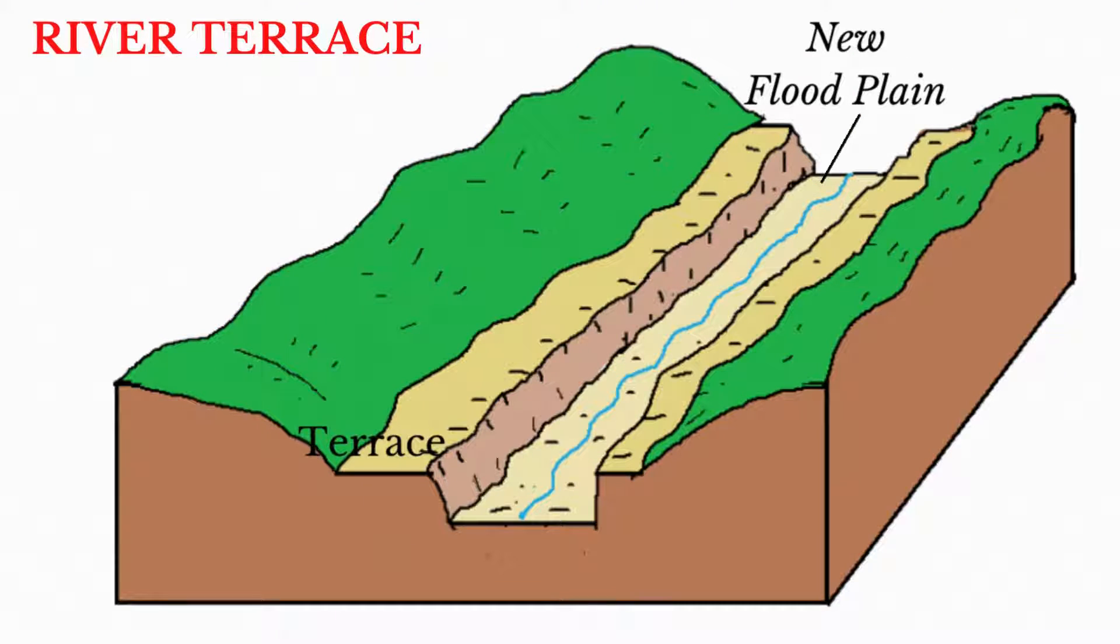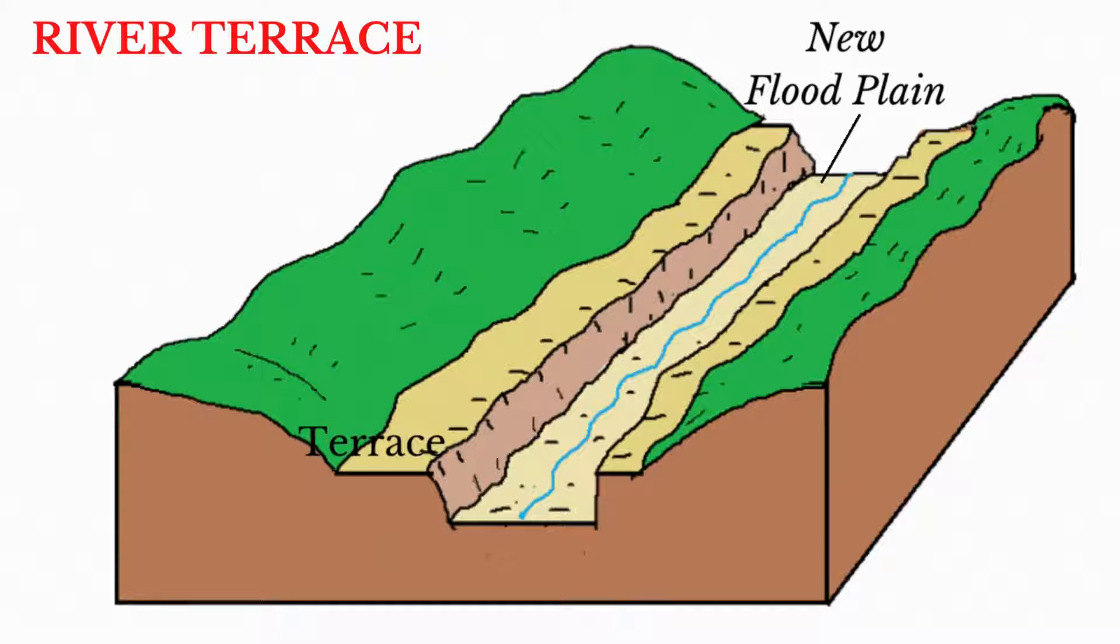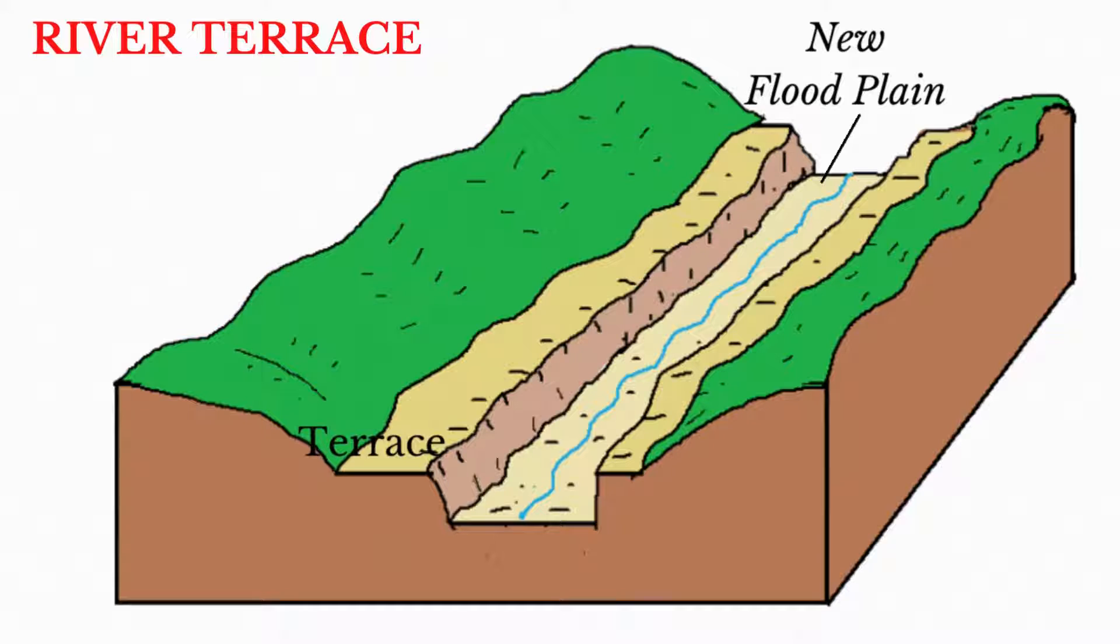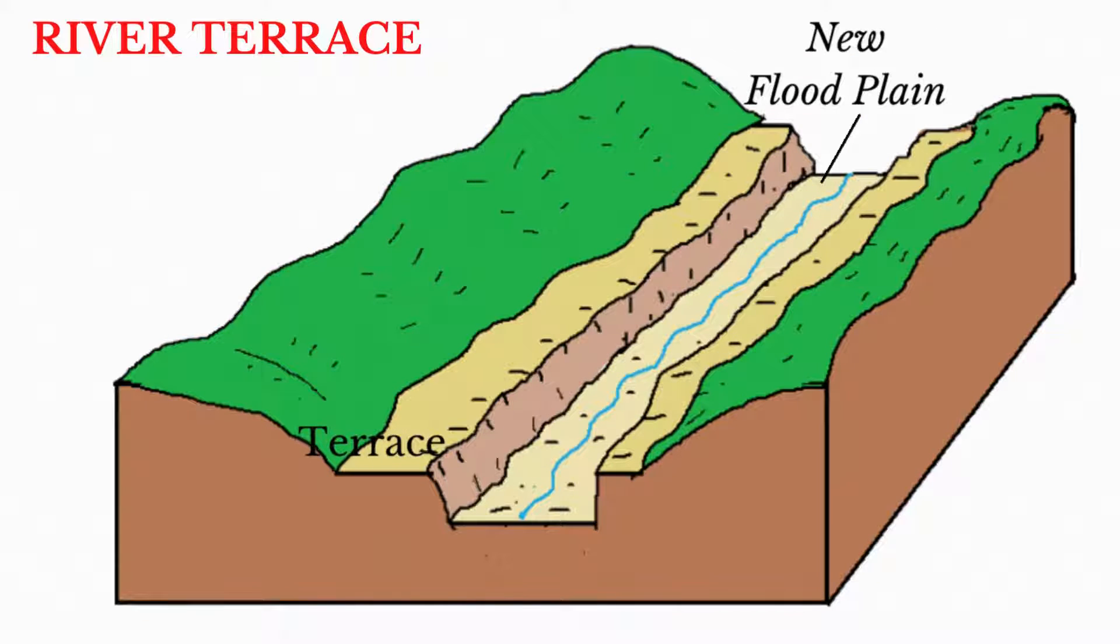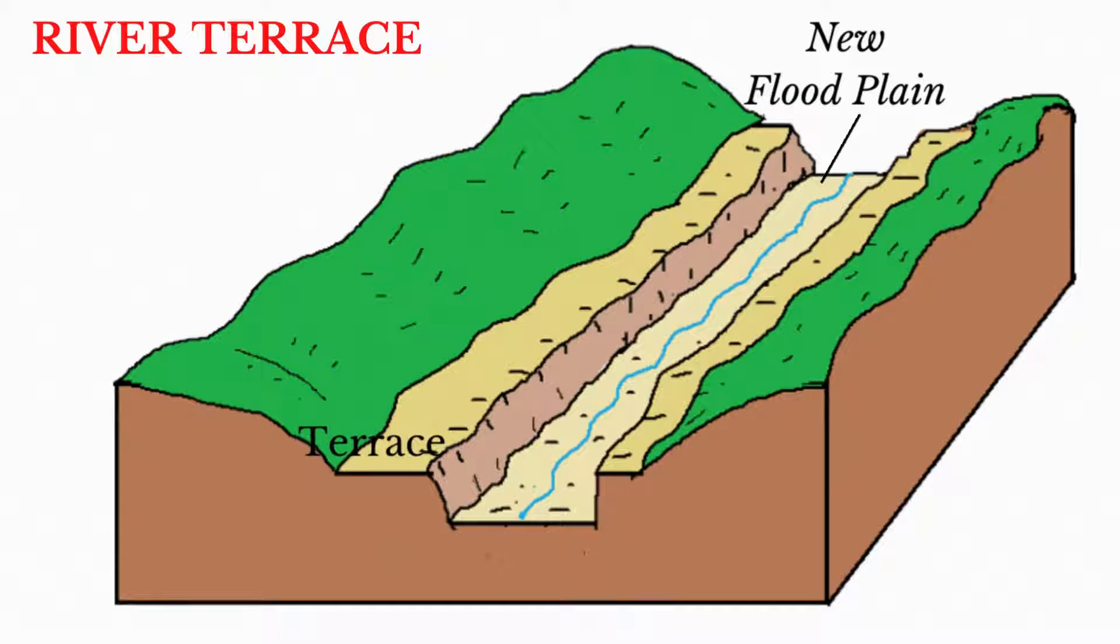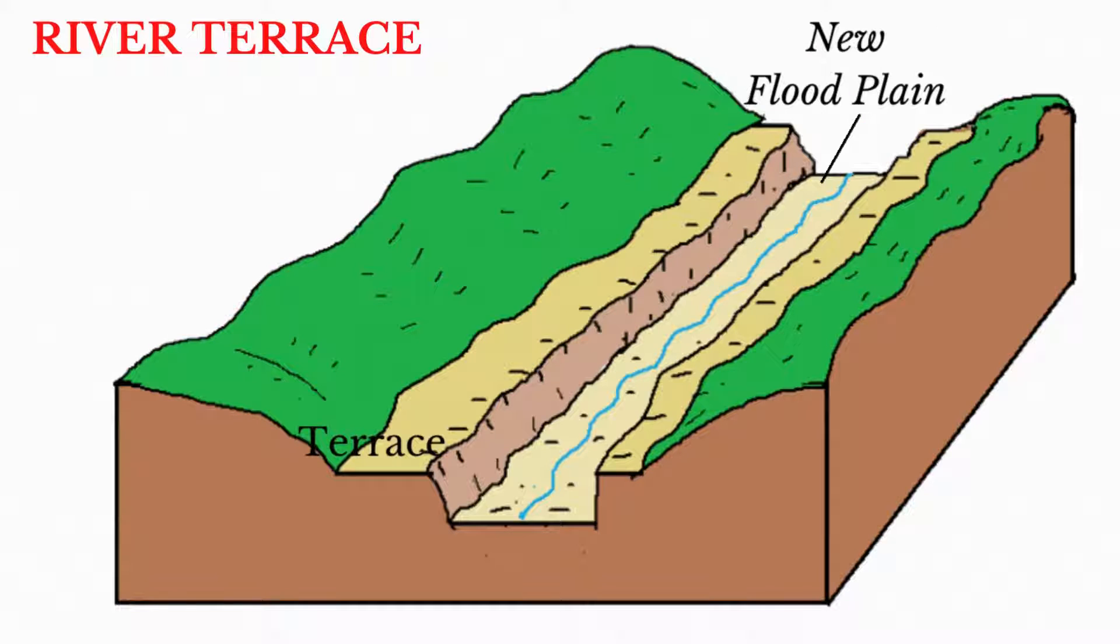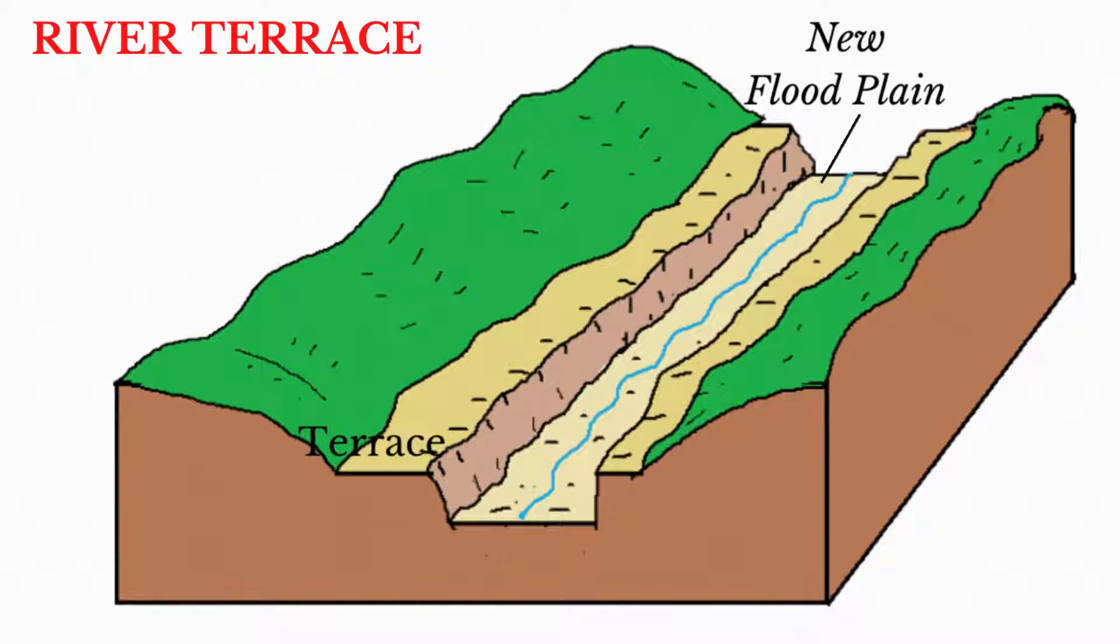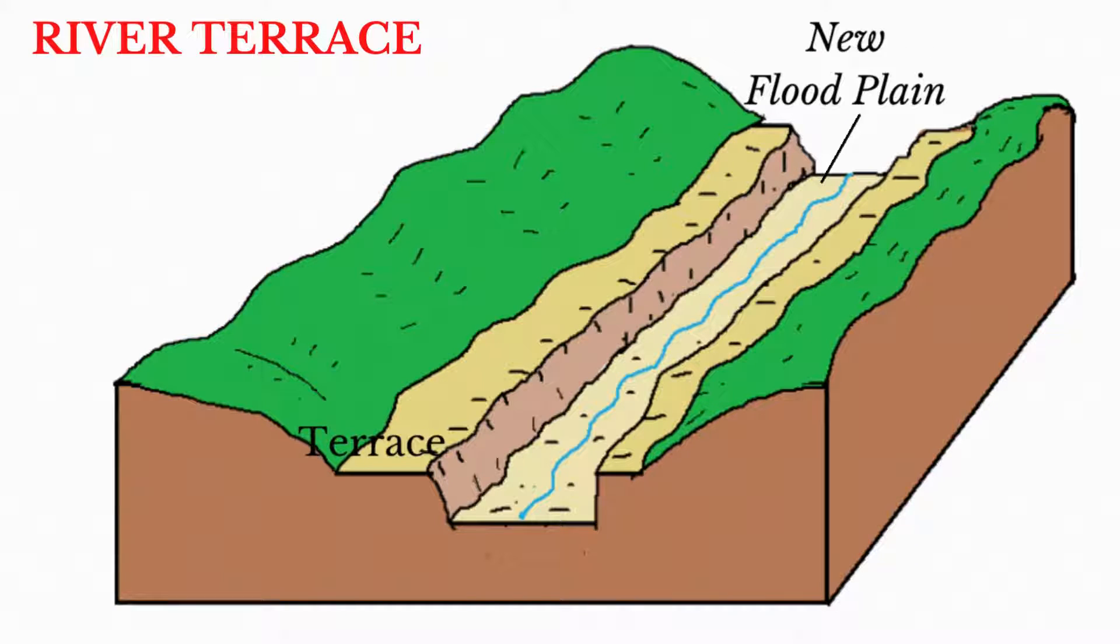Another feature developed in the cross-profile due to rejuvenation are river terraces. River terraces are old floodplains left perched above the current floodplain and resulting in a series of steps on the side of the river. Following rejuvenation, the river will cut down into its channel and will gradually form a new floodplain. The old floodplain is what is left high and dry as a river terrace.